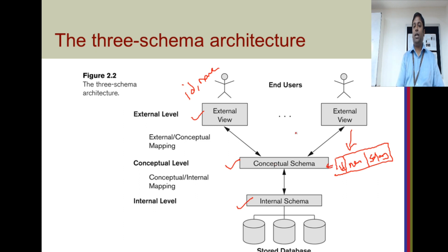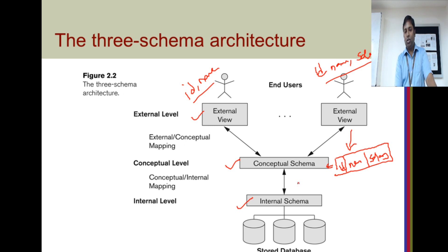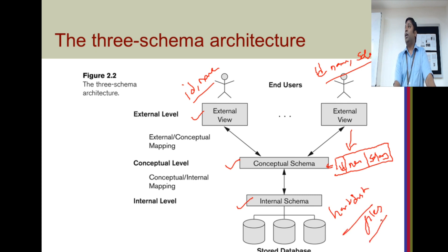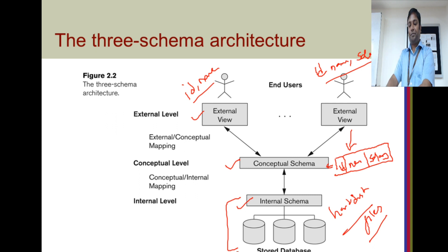That is the conceptual schema and these are the views. A supervisor can view ID, name, and salary — three columns on the table. A student can view only two columns. What is the internal schema? It defines how your data is stored on the hard disk — using storage structures, data structures, and indexes. It defines how the organization of data happens at the very internal level.